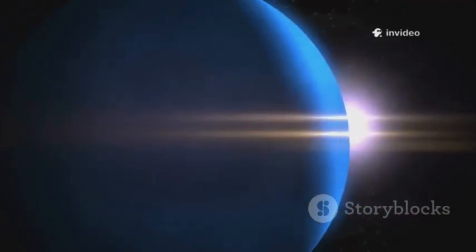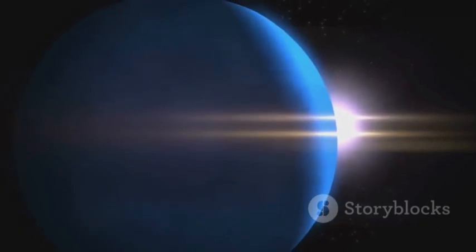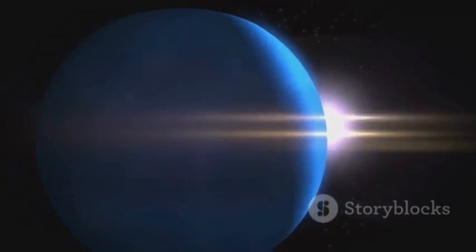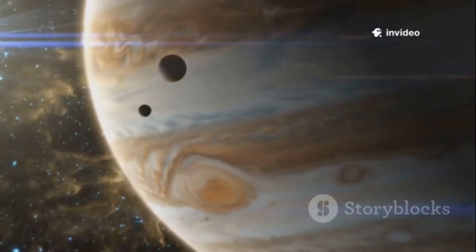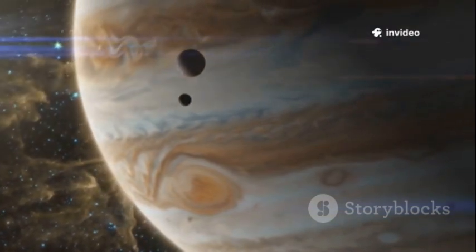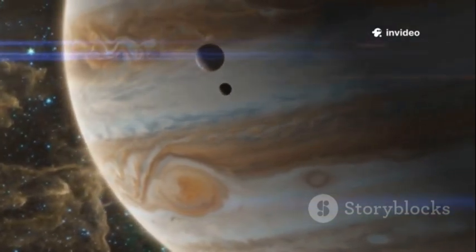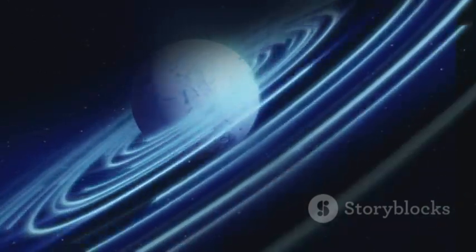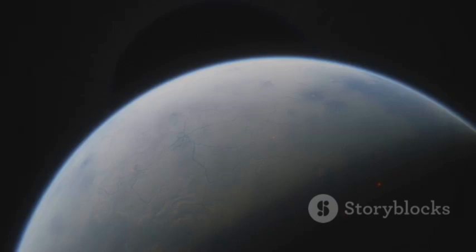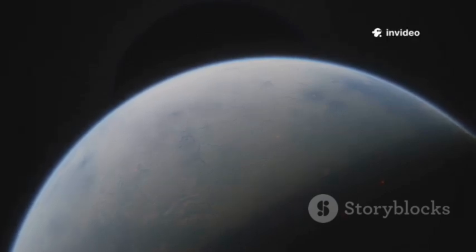Sunlight, traveling at the speed of light, takes over four hours to traverse the immense distance to Neptune. Imagine standing on one of Neptune's moons, the Sun would appear as nothing more than a bright, distant star in the inky blackness of space. Studying Neptune presents significant challenges due to its extreme distance and faintness, but it is precisely these challenges that make it so irresistible to scientists and astronomers. Why should we dedicate our time and resources to understanding a distant ice giant like Neptune?